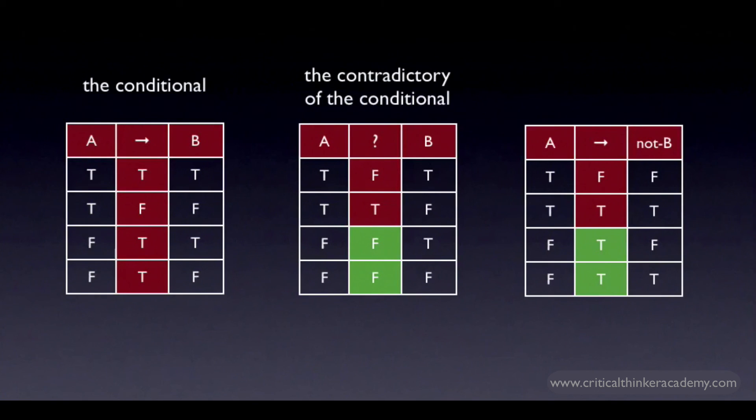They match for the cases where A is true but not where A is false. From this alone, we can rule this out as a candidate for the contradictory. Whatever functions as the contradictory of the conditional has to be more restrictive in its truth value so that it comes out false whenever A is false.